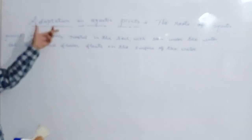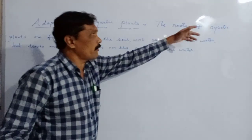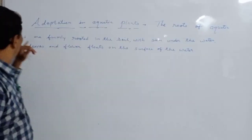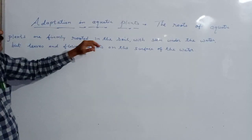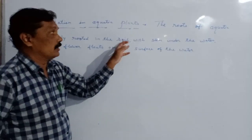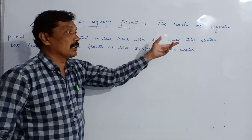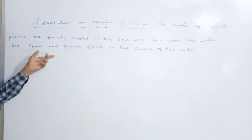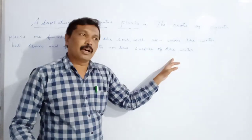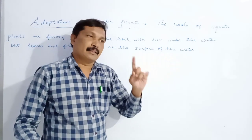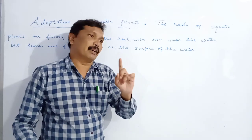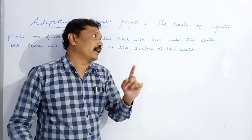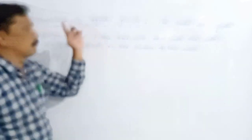Adaptation in aquatic plants. The roots of aquatic plants are firmly rooted in the soil, which stays under the water. But leaves and flowers float on the surface of the water. This is the first adaptation which we find in aquatic plants.